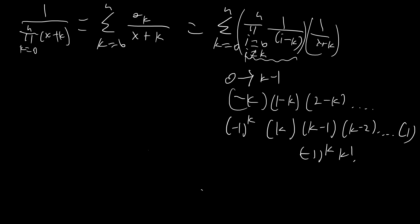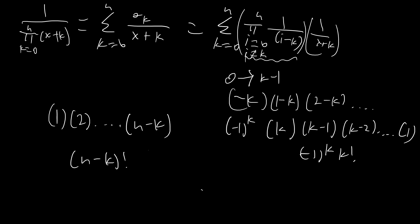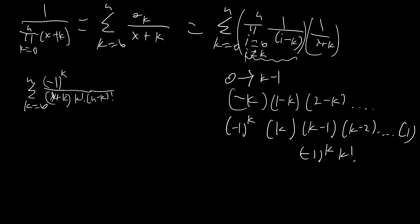Now let's consider the terms where i is greater than k. The first such term is when i equals k plus 1, giving 1; the next gives 2; continuing until i equals n, giving (n minus k). So the product for i greater than k is simply (n minus k) factorial. Overall, the full product in the denominator of A_k evaluates to (negative 1)^k times k factorial times (n minus k) factorial.